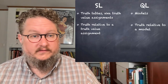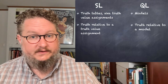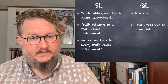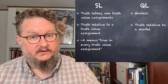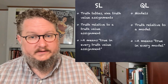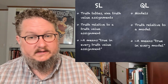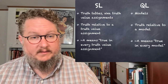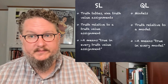In SL, the truth value of a statement is relative to a truth value assignment — you could choose a different assignment and get a different truth value for contingent sentences. In QL, the truth of a statement is relative to a model. Tautologies in SL are true in every truth value assignment, whereas in QL, a tautology is true in every model — that's when you have a statement on the right-hand side of the double turnstile with nothing on the left, indicating a tautology.